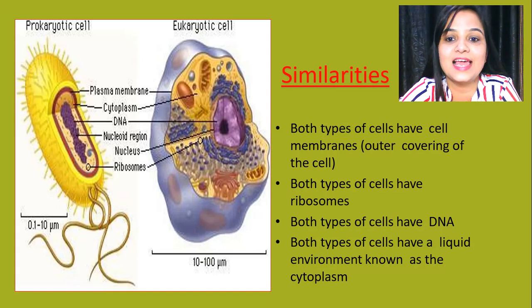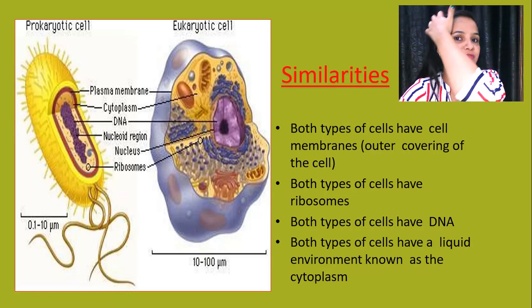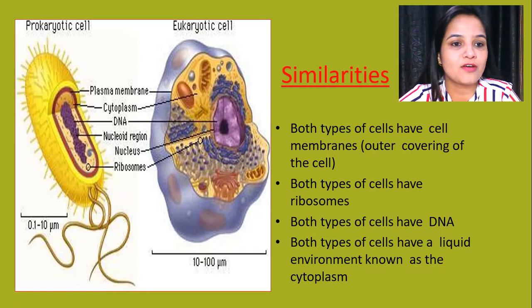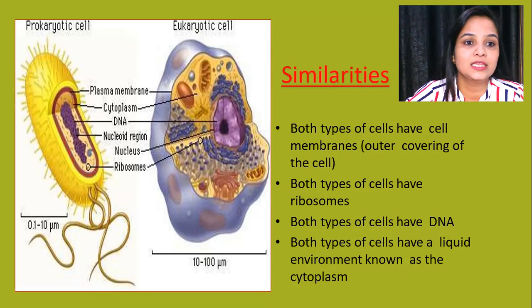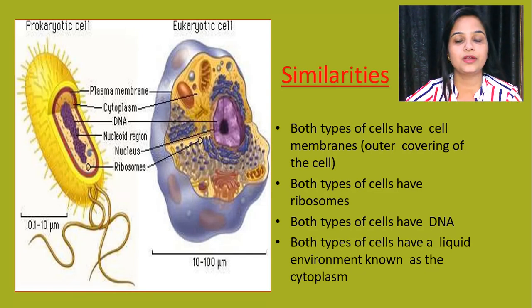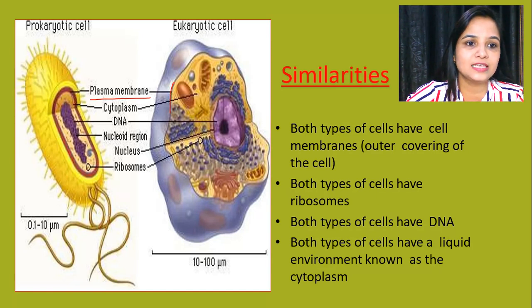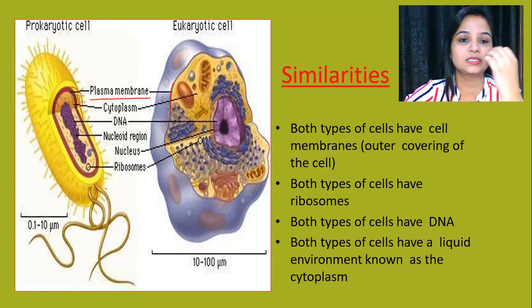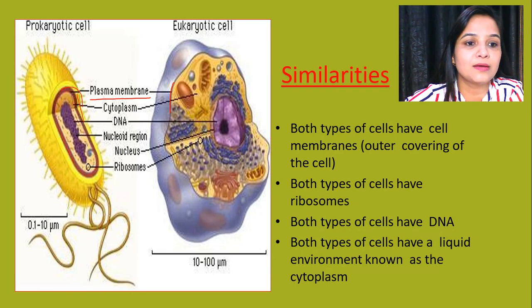Now let's come toward the similarities between the prokaryotic and eukaryotic cell. There are so many things which are similar in both types of cells. Here you can see a few of the most important ones from the exam point of view. The first thing is the plasma membrane, because this is the outer covering of the cell, which is present in both types of cells — in eukaryotic cells as well as in prokaryotic cells.